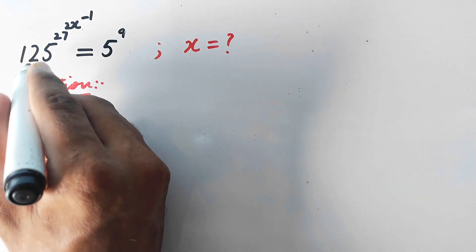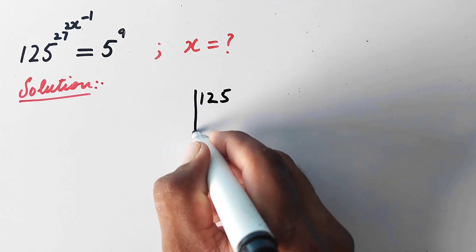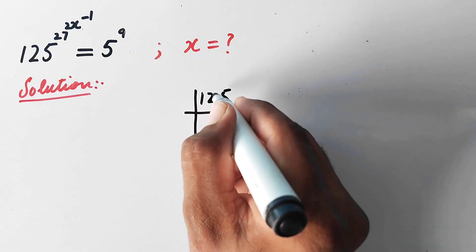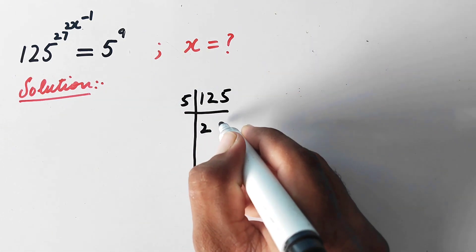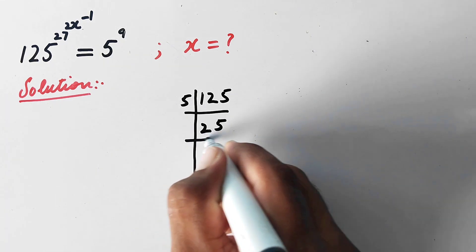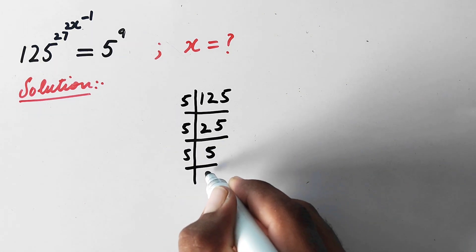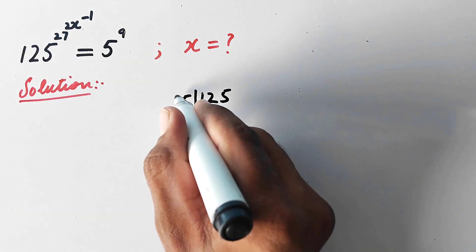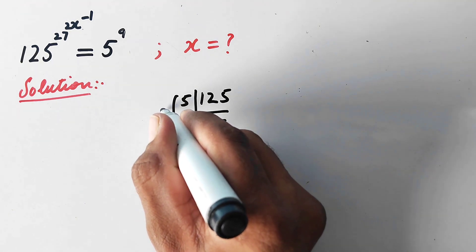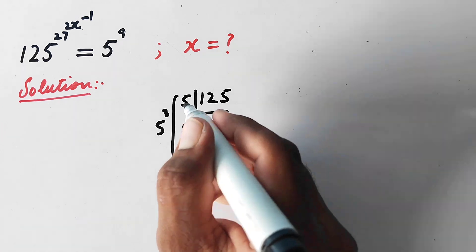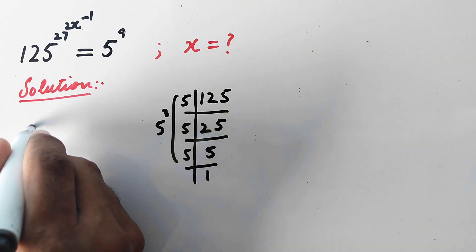In the first step, we will factorize the value 125. Dividing 125 by 5 gives 25, dividing by 5 again gives 5, and dividing by 5 once more gives 1. So we can write 125 equal to 5 raised to power 3.